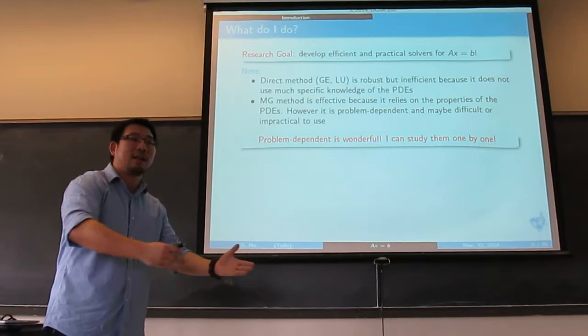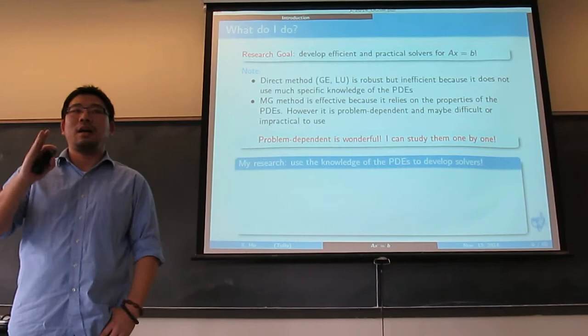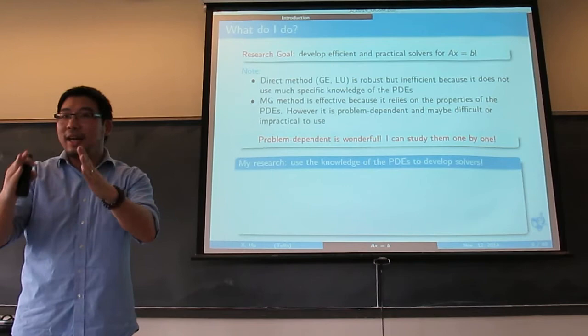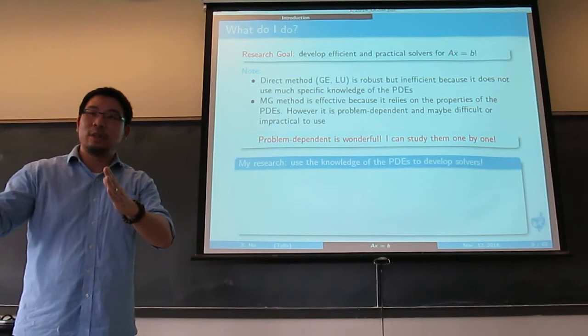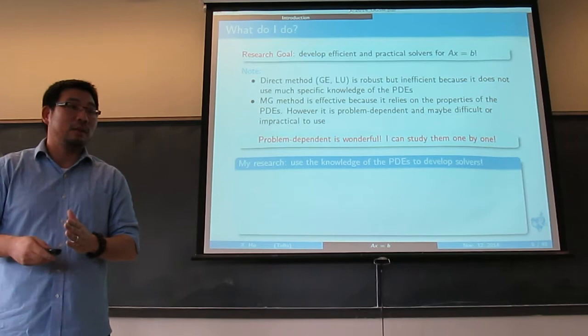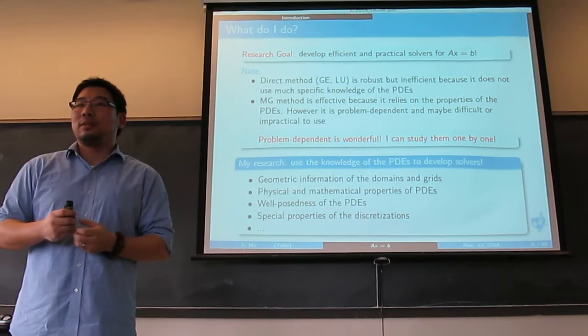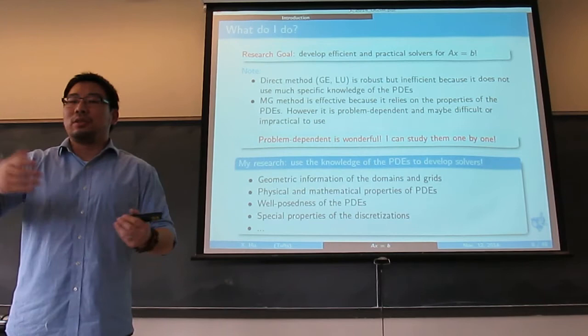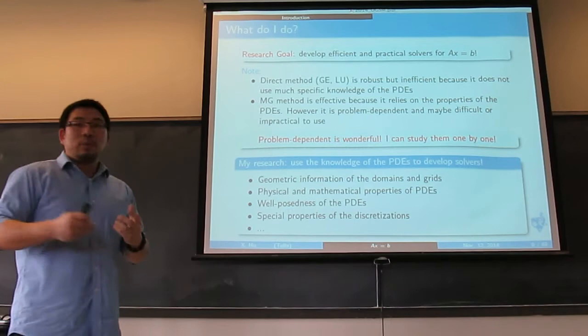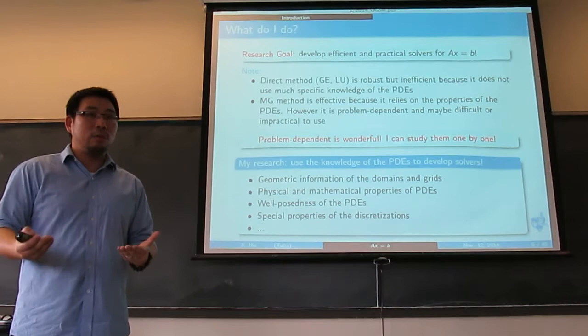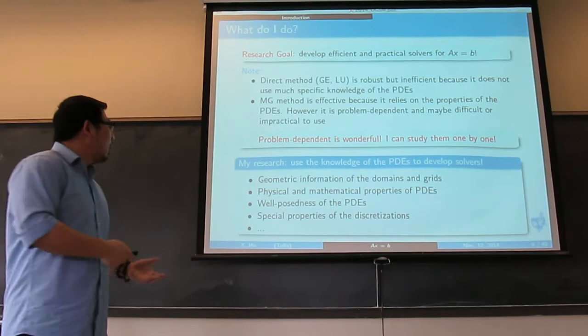For another class I can design other solvers. I want to use anything I have to develop the solver — not only looking at the matrix A, but looking at where A comes from, what mathematical property is behind it that I can use. I can use everything: the grid, the property of the PDEs — whether it's a Poisson problem, Laplace, convection, or hyperbolic. Whether the problem's solution is unique also gives a hint on how to develop a solver, as does the discretization description.